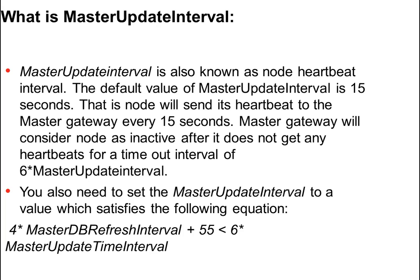The master update interval is also known as the node heartbeat interval, which governs inter-node communication. The default value of the master update interval is 15 seconds — that is, the node will send its heartbeat to the master gateway every 15 seconds. The master gateway will consider the node inactive after it does not receive heartbeats for a timeout of 6 times the master update interval. For a multi-node setup, the formula is: 4 × master DB refresh interval + 55 < 6 × master update time interval.